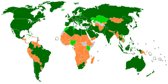The International Electrotechnical Commission is an international standards organization that prepares and publishes international standards for all electrical, electronic and related technologies, collectively known as 'Electrotechnology'. IEC standards cover a vast range of technologies from power generation, transmission and distribution to home appliances and office equipment, semiconductors, fiber optics, batteries, solar energy, nanotechnology and marine energy, as well as many others.